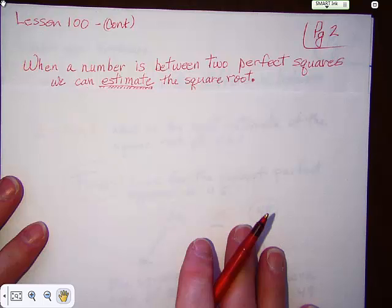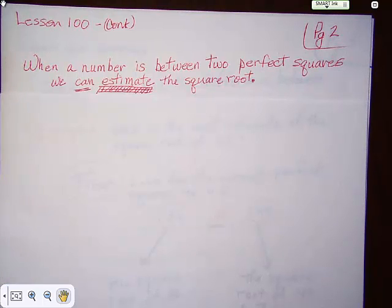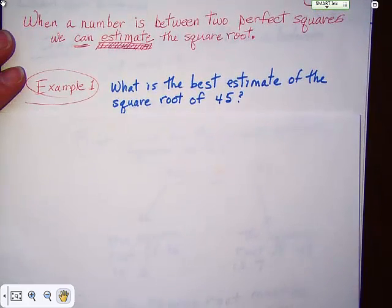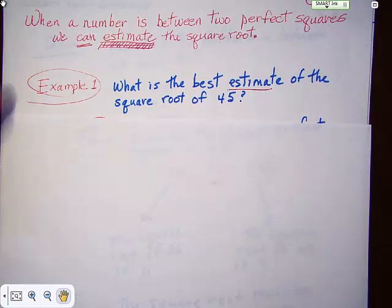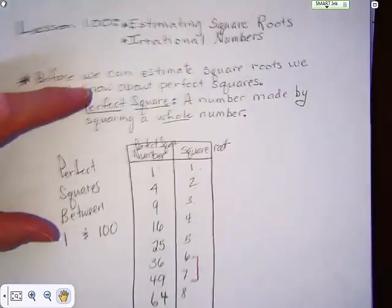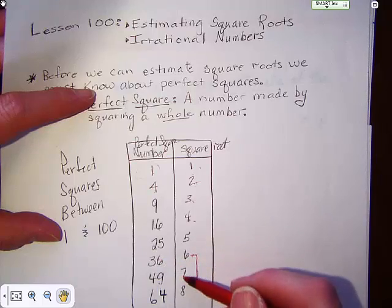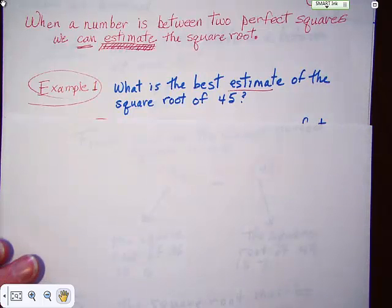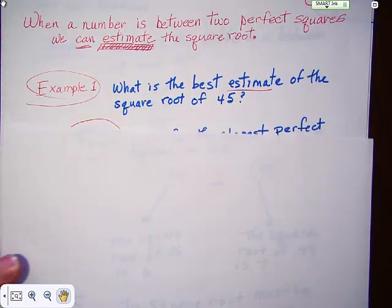If we know what two perfect squares a number is between, we can use that to estimate a square root for a number that isn't a perfect square. Here's our example: what is the best estimate — notice the word estimate — of the square root of 45? We have to think for a second and go back to that first chart. What two perfect squares are on either side of 45? Let's go back and look.